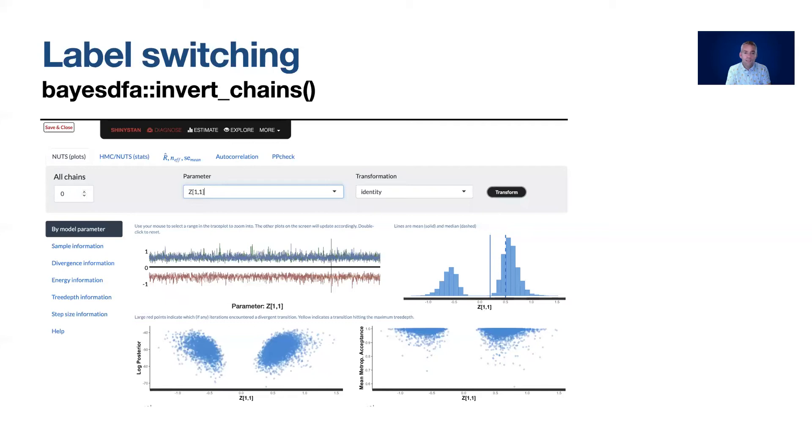One of the challenges in working with DFA in a Bayesian sense is that there's this really nasty label switching problem. Label switching occurs if we look at the results from multiple MCMC chains that are run in parallel. If we were to run this kind of model through conventional diagnostics it would appear to not converge.